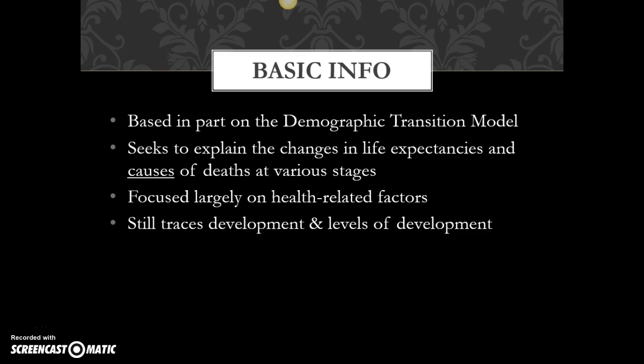Specifically, the epidemiological transition model seeks to explain the changes we see in life expectancies and the causes of death at various stages. It focuses largely — almost entirely — on health-related factors, and just like the demographic transition model, we're still tracing development and talking about how levels of development impact what's going on.